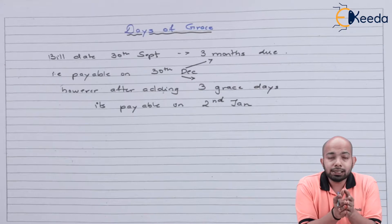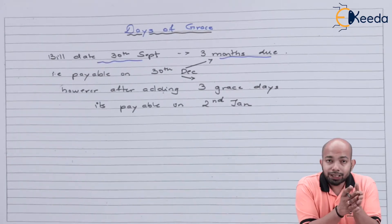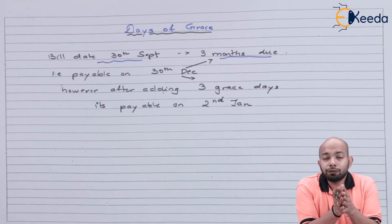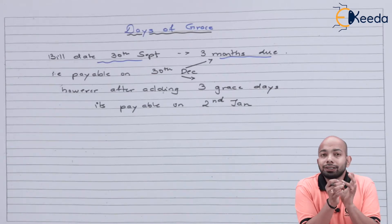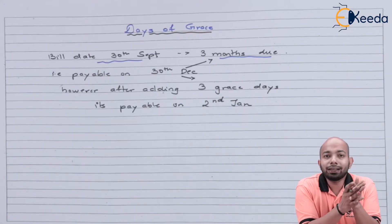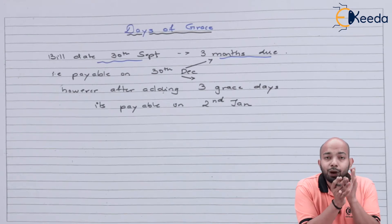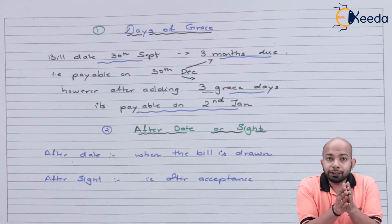For the first situation where days of grace are considered: if a bill is dated 30th of September and is payable after three months, three months from 30th September comes to 30th December. If we take only 30th December as the due date, that is wrong because we haven't added three days of grace. Adding three days gives 31st December, 1st January, and 2nd January — so the actual due date is 2nd of January.